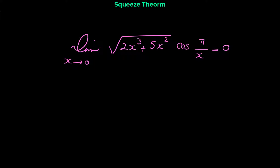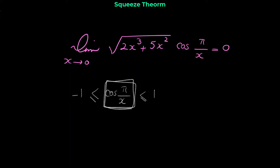When we want to use the squeeze theorem for finding limits, we usually start with the trig part of the limit. So here for finding this limit, we have to start with the cosine of π/x. The expression cos(π/x) is always between negative 1 and 1. This is the first step in most of these types of limits that we prove with the squeeze theorem. For sine and cosine — not tangent, only sine and cosine.